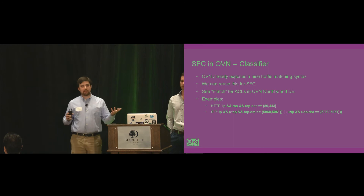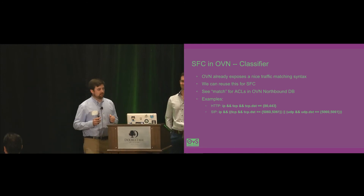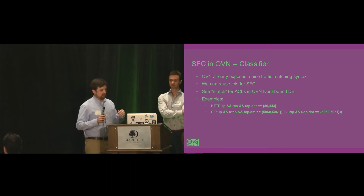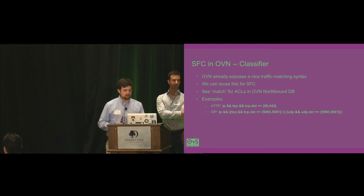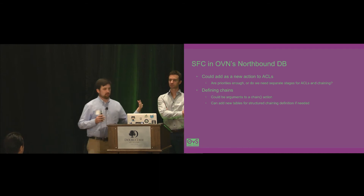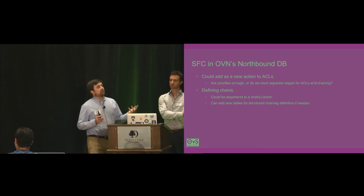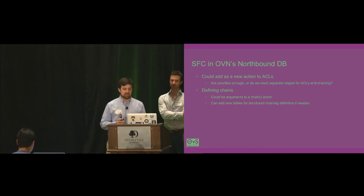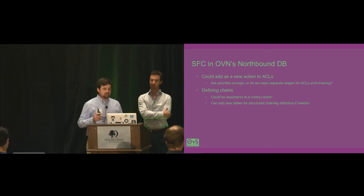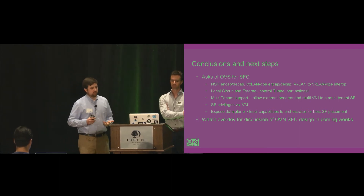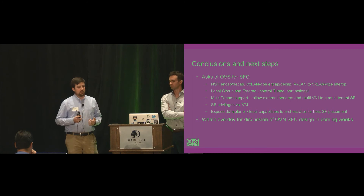Another part is the classifier — how we define the type of traffic to match. This is probably one of the easiest parts in OVN to address. We already have a nice way of doing that, the same way we expose matching traffic for ACLs, as defined in the OVN documentation, and we can just reuse that. How we expose SFC in OVN's northbound database is still an open question: maybe it's an easy modification to existing ACL support, a new action for the ACL table, or maybe a new table. These questions need to be answered, but it seems like there's a path for SFC in OVN. Join the OVS development mailing list to get involved — in coming weeks we'll start diving more into the detailed design.